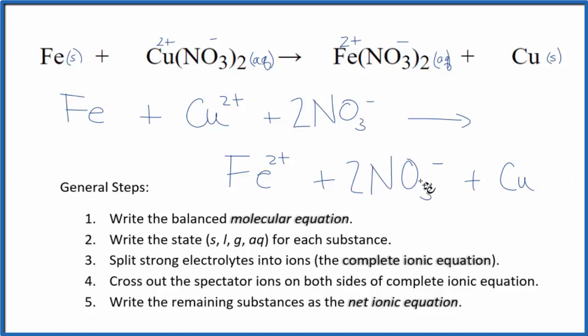So this is the total or complete ionic equation. Now we get to cross out the spectator ions. These appear on both sides of the total or complete ionic equation. In essence, they don't change. So we're not interested in them. The only thing I see that's the same would be the two NO3 minus. The two nitrate ions. I have it here in the reactants and here in the products. I can cross that out. But everything else is different. Iron and iron two plus. Those are very different.